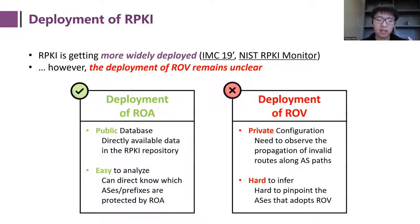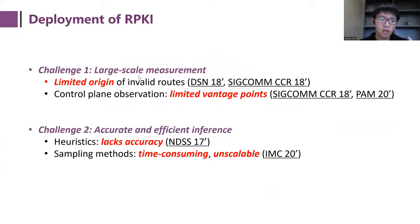First, there is no public data to use. Because the validation process is configured on the routers and the configuration is usually private, we can only instead observe the propagation of invalid routes to see which AS paths are filtering invalid routes. Second, because we can only observe the filtering behavior over the paths, we need extra inference techniques to pinpoint the AS that adopts ROV. Due to these two reasons, current measurement of ROV deployment is mainly limited in two aspects.